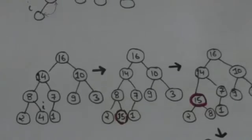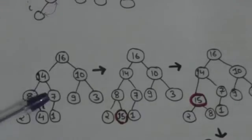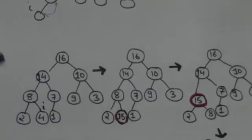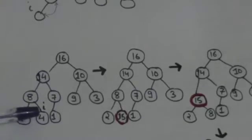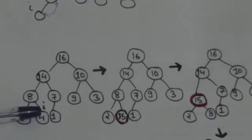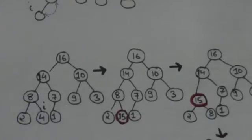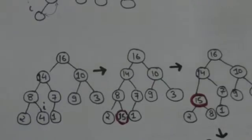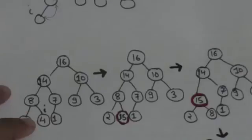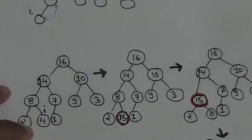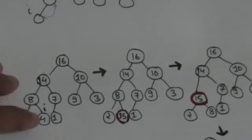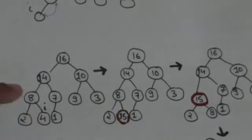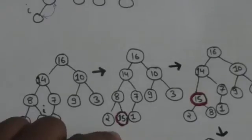It will be more clear after this example. See this max heap — this is node i. Currently the value at node i is 4. Now we have to increase the value of node i and make it 15. So first of all we will increase the value of node i to 15, and when we do that we will get this updated max heap.